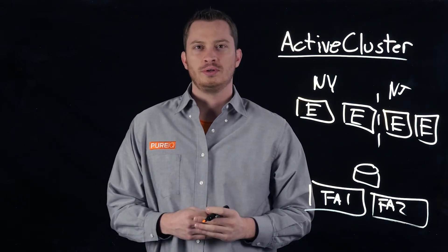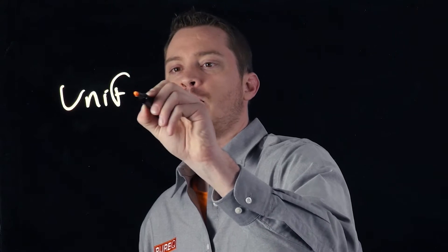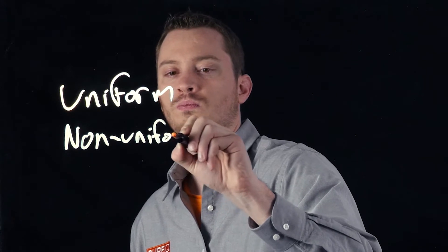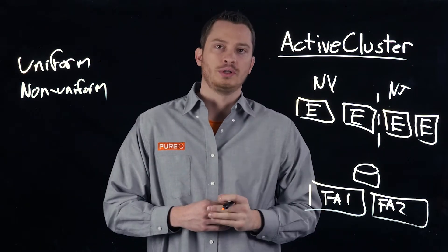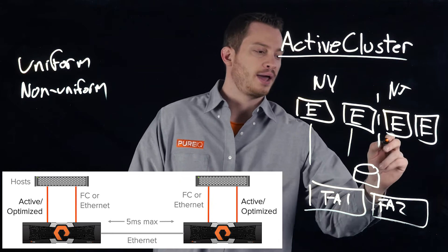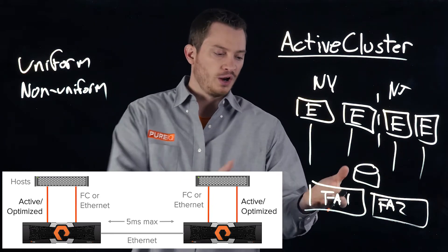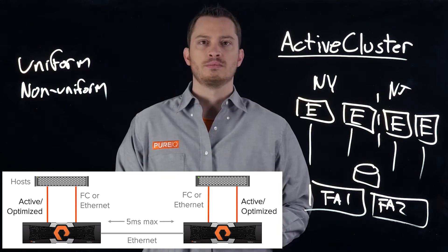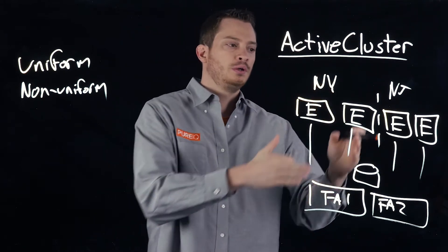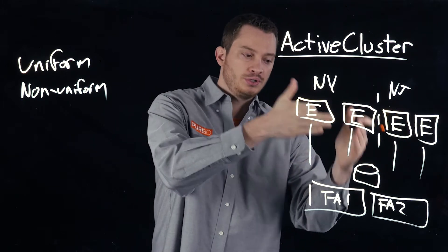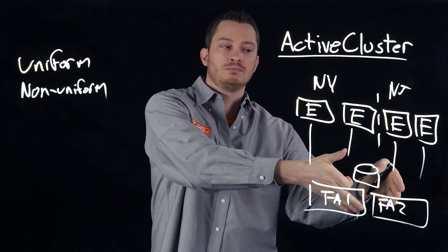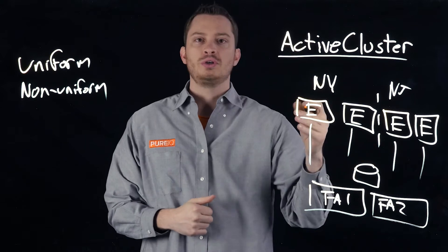There are two different types of stretch vSphere clusters: uniform and non-uniform. In a non-uniform cluster, ESX servers have paths only to the array that's local to them. One array is in New York, one is in New Jersey. The ESX servers in New York only have paths to the stretched volume via the New York Flash Array, and those in New Jersey only have paths via the New Jersey array. So if the New Jersey array fails, those hosts no longer have access to storage and the other hosts have to take over.